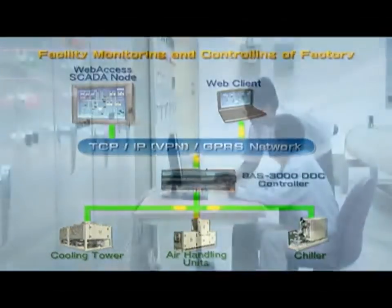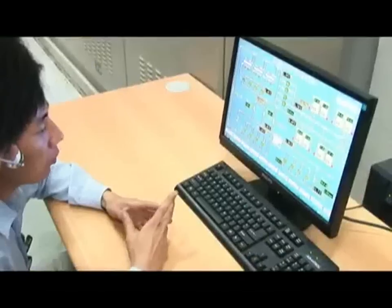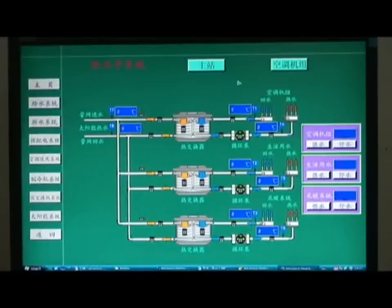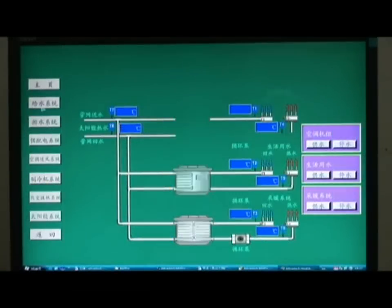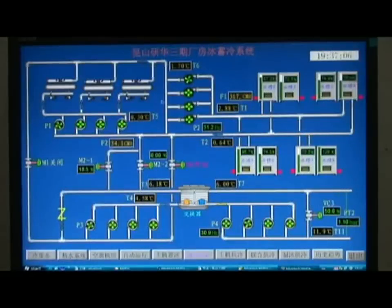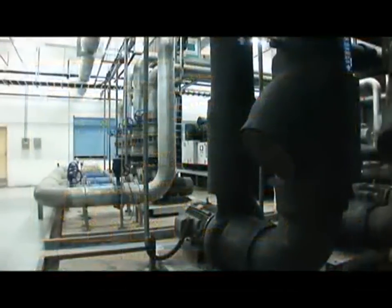16-bit analog input channel precision also helps to precisely measure temperature, humidity, dew point temperature, and enthalpy to effectively control air conditioning and maintain constant temperature and humidity.